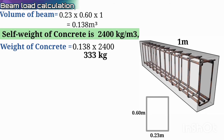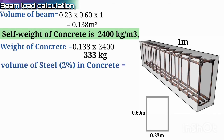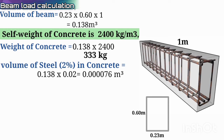We know that in this beam we are using 2% of steel, so we can also calculate the weight of the steel. For finding the weight of the steel, first we have to determine the volume of the 2% steel. So we have to determine the volume of 2% of steel: 0.138 × 0.02, which equals 0.000276 cubic meters. That is the volume of the steel.